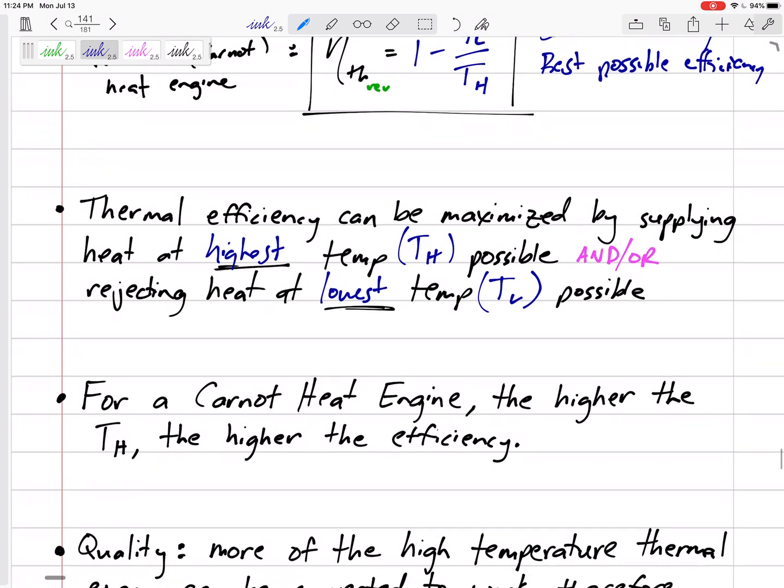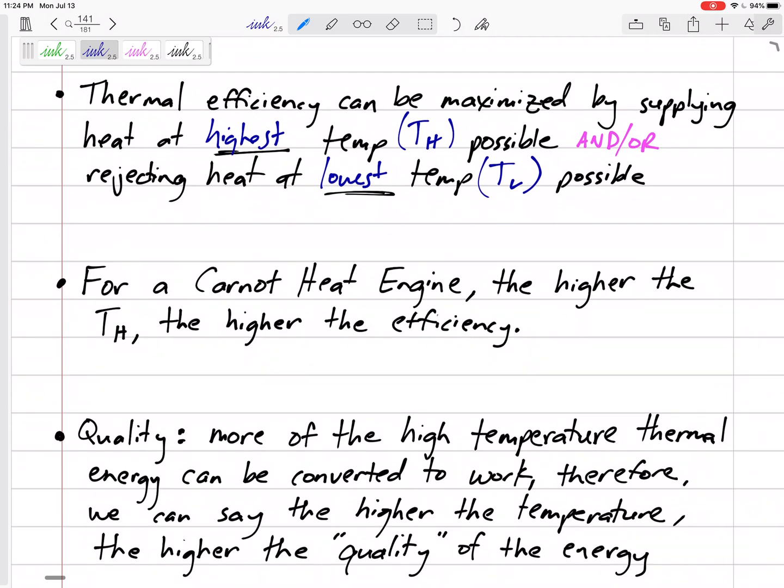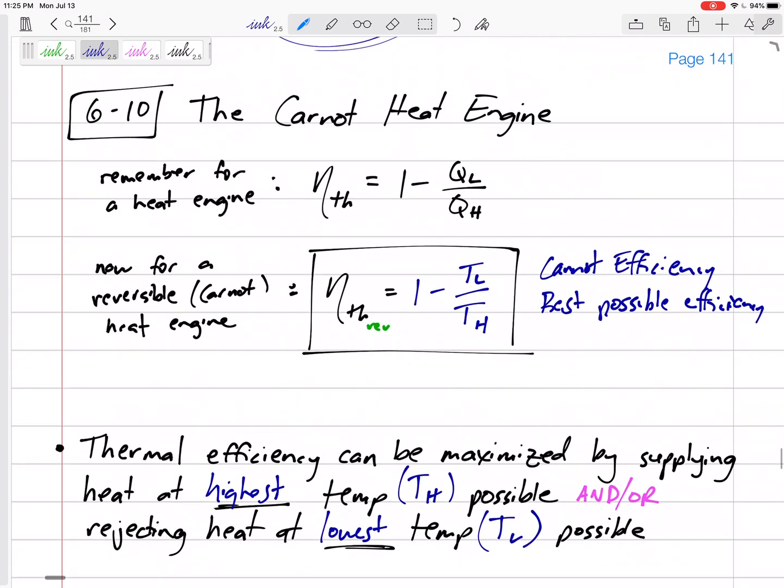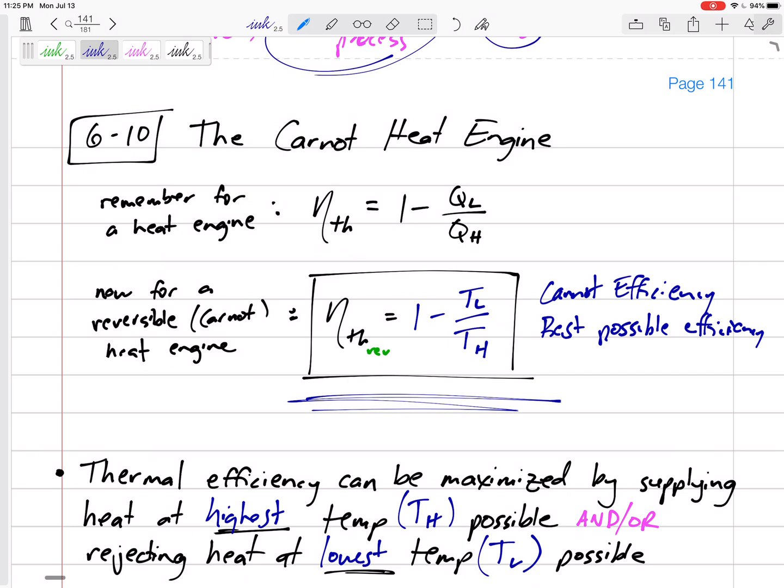For a Carnot heat engine, the higher the TH, the higher the efficiency. Quality - why is this true? Because the higher temperature thermal energy can be more easily converted to work. So the higher the temperature, the higher the quality of the temperature. We're not going to entropy per se just yet, but that's the idea that the higher temperature can more easily or more of it can be converted to work. We say that the higher temperature, the higher quality of that work.